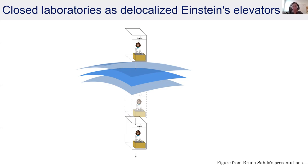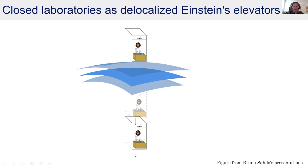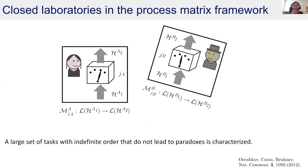A more concrete way to imagine this is through an image from Brukner where Alice is in a laboratory in free fall in spacetime. Because the equivalence principle holds, everything inside her laboratory works as usual — she cannot say what's happening outside. Suppose she's passing through a region of spacetime where you have a superposition of masses and maybe an indefinite metric; then Alice would become delocalized in this spacetime.